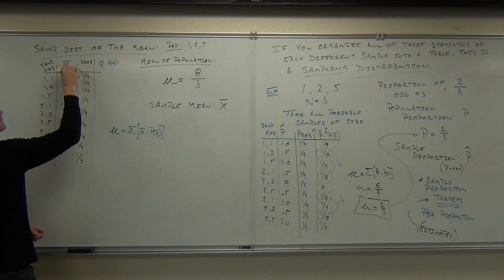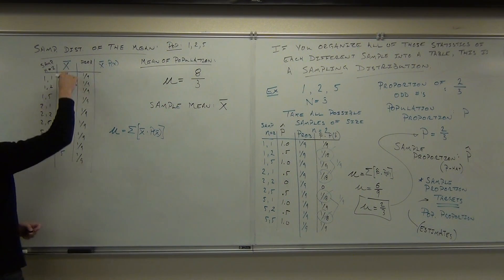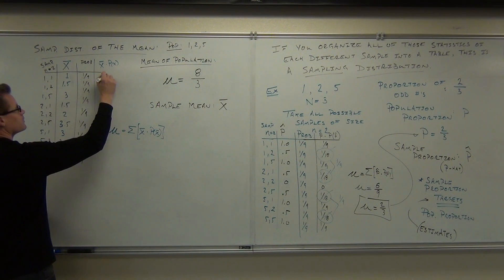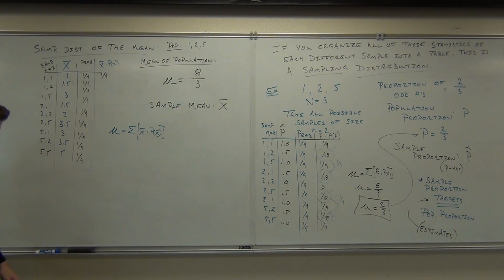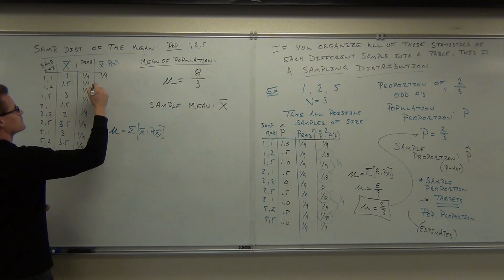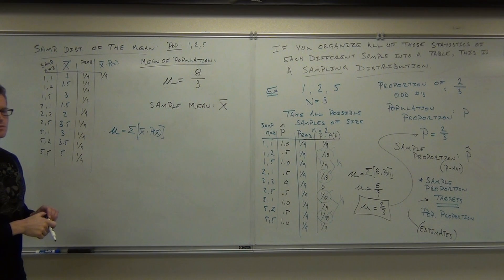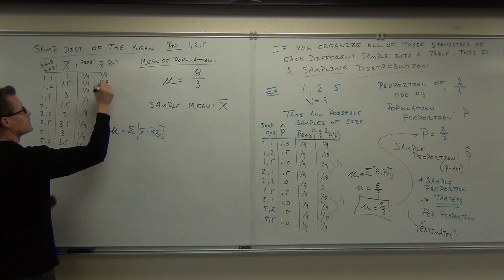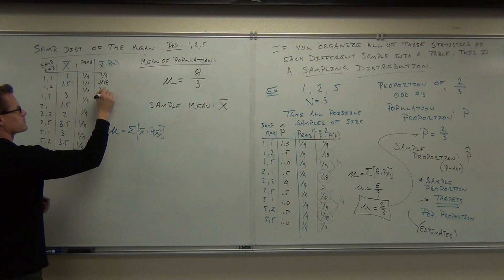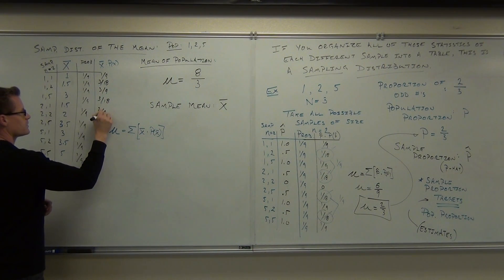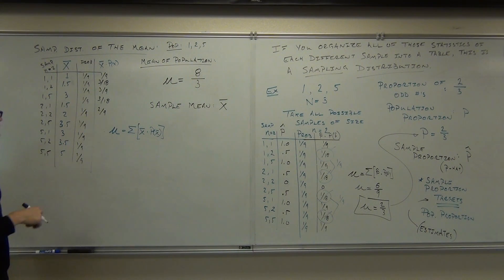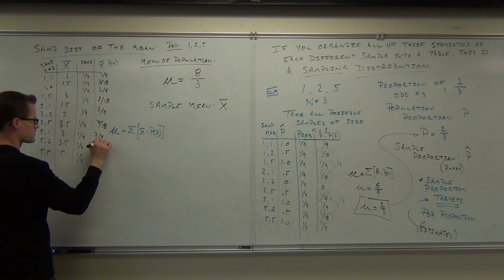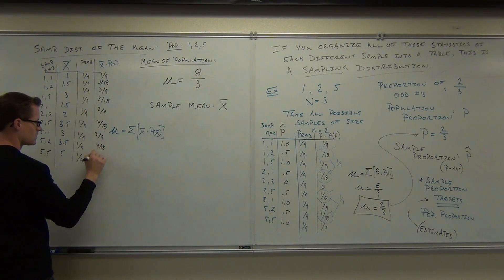It would be the sum of x bar times p of x bar for this case. We're going to calculate x bar times p of x bar, or in other words, x bar times the probability of each sample occurring. We get one ninth, one point five gives three eighteenths, three ninths, three eighteenths again, two ninths, seven eighteenths, three ninths, seven eighteenths, and five ninths.